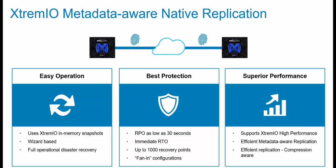In this demo, I will present the main disaster recovery operations of XtremeIO Native Replication. XtremeIO Native Replication is an asynchronous replication that supports an RPO of 30 seconds or more and supports up to 1000 recovery points per volume. It has the most efficient replication as it is metadata-aware, meaning that only unique blocks are replicated. The native replication replicates only the changes done between cycles, and as XtremeIO is content-aware storage, it replicates only unique blocks.